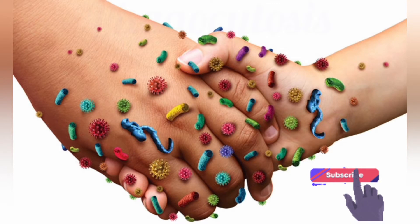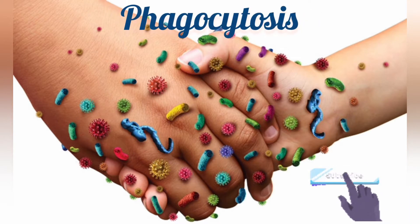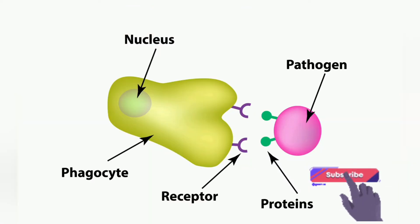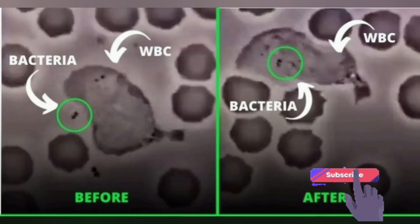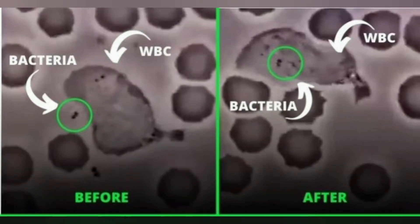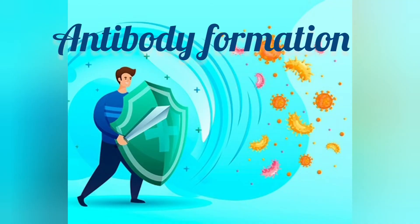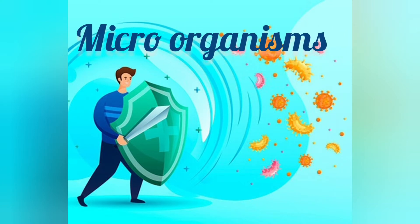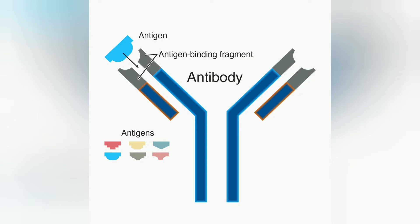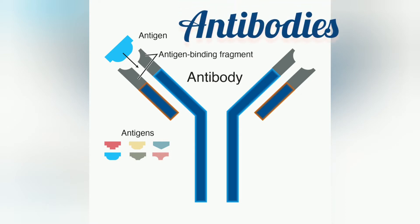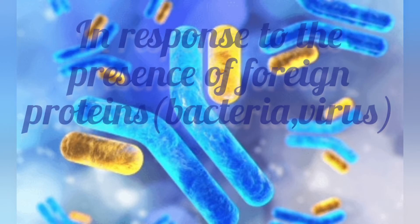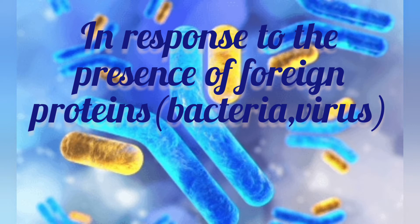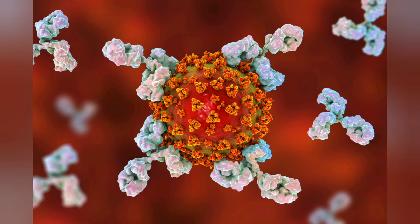Now let's get to know about phagocytosis. Phagocytosis means the ingestion of bacteria by certain cells of the body which make them harmless. Now coming to antibody formation. The nature has given further protection from microorganisms by forming substances known as antibodies. Antibodies may be defined as the substances formed in the body in response to the presence of foreign proteins and certain other materials in the tissues.